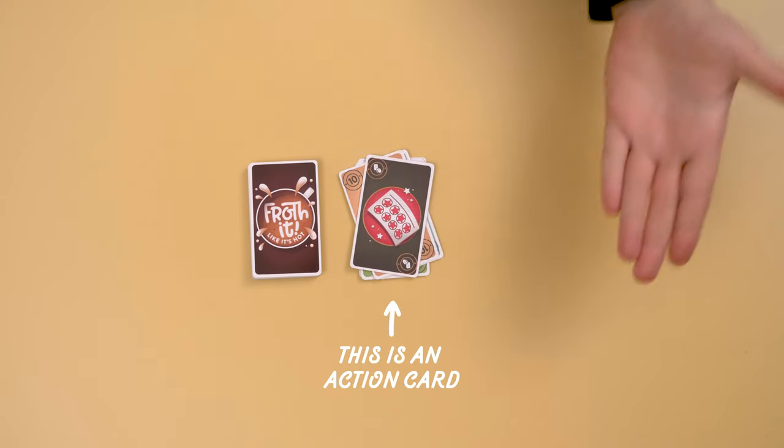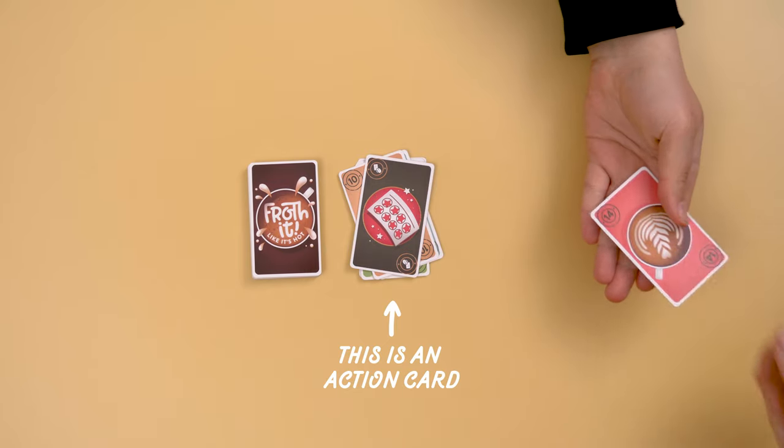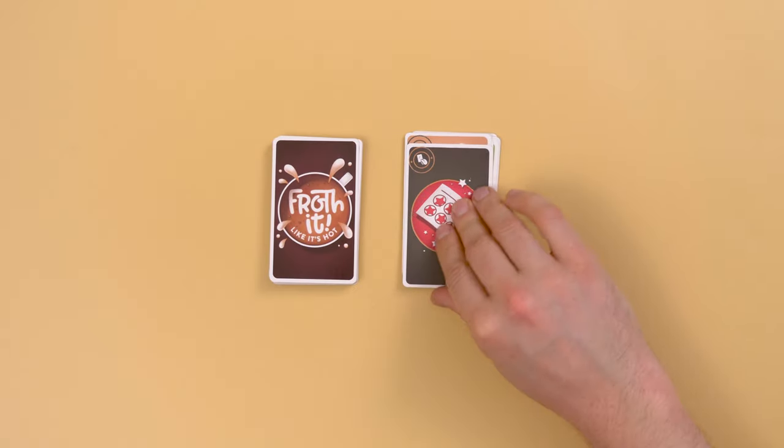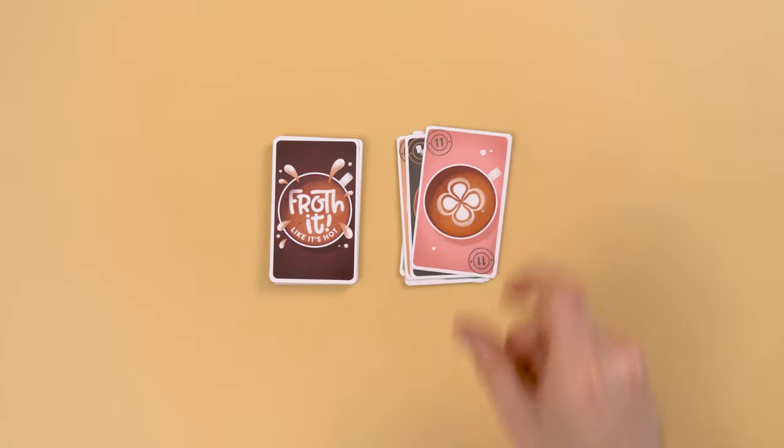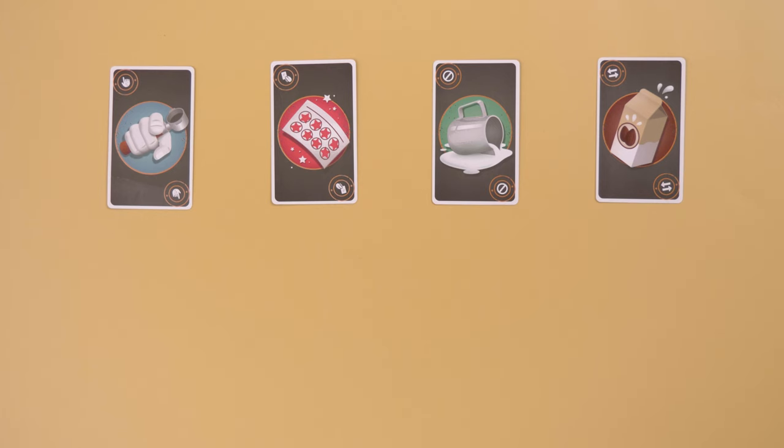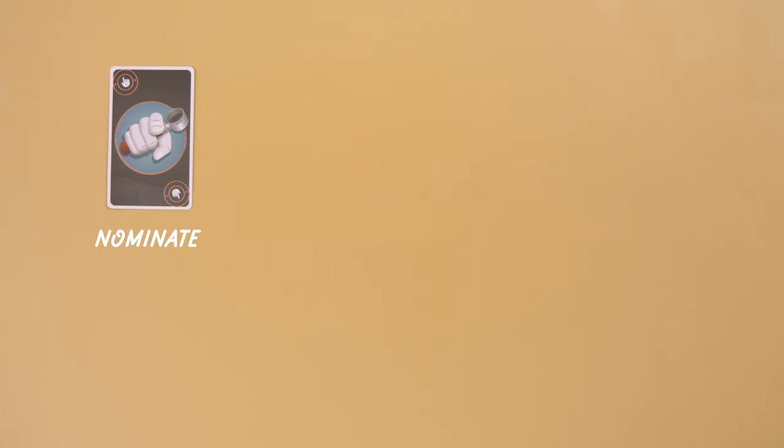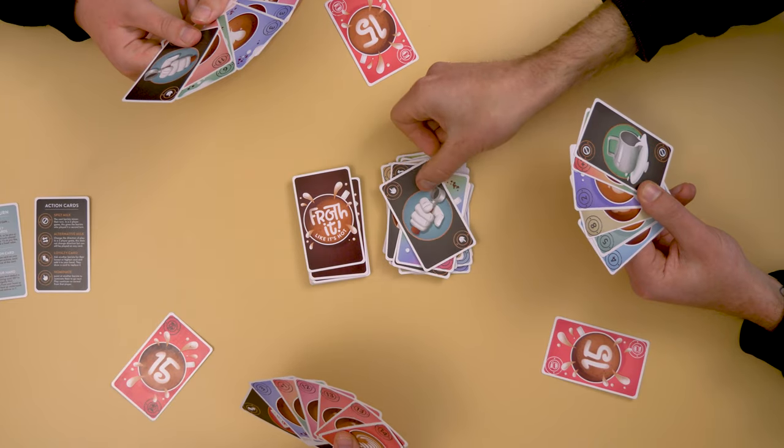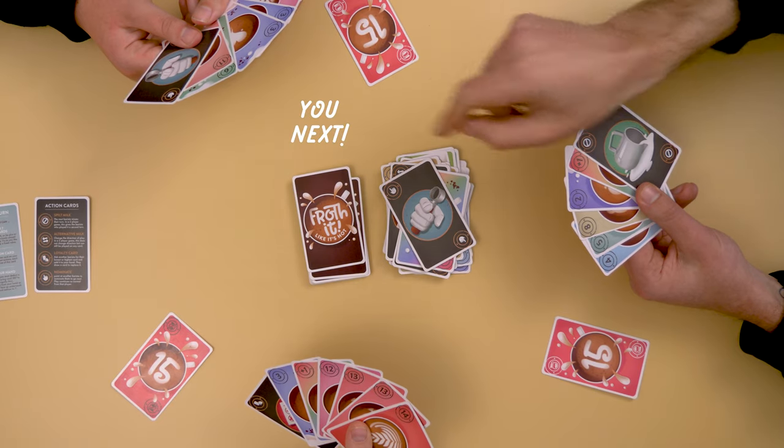Action cards can be played on top of any card. Once the action is resolved, the next latte art card must follow the card under the action card. You can only play one action card on your turn. There are four types of action card. Nominate: point at another barista to nominate them to go next. Play continues as normal from that player.